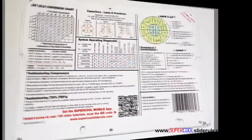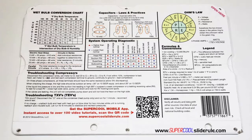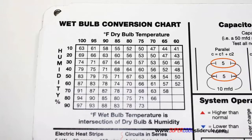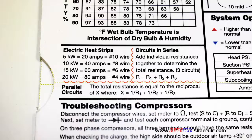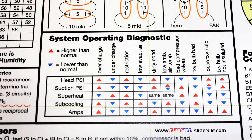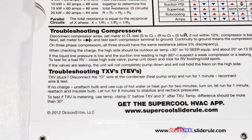The back cover contains required formulas, capacitor rules and practices, a wet bulb conversion chart, how to perform computations on series or parallel circuits, an electric heat strip guide, a complete system troubleshooting diagnostic chart, and how to troubleshoot compressors and TXV.